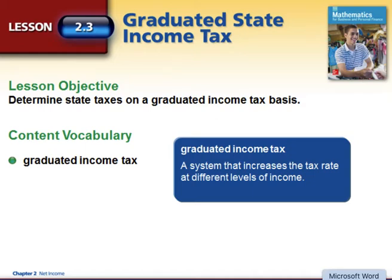Hi there, consumer math students. Today's lesson is going to continue where we left off yesterday when we calculated the state income tax. Today we're going to do it using a graduated state income tax system. Yesterday we had just a flat rate — Pennsylvania's tax rate being 3.07%, or other rates like 3.5% or 3.2%. Using the graduated tax system, this is going to work like we did when we calculated the federal income tax.